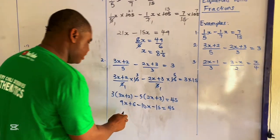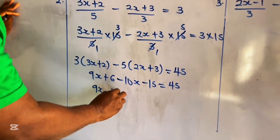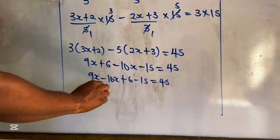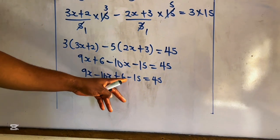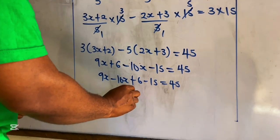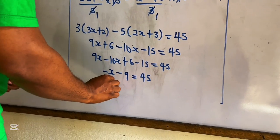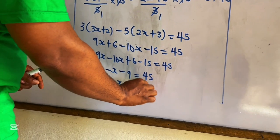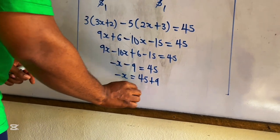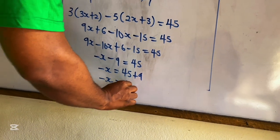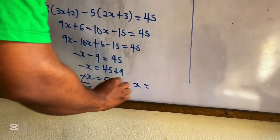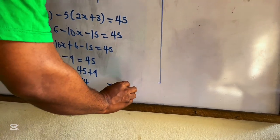Collecting like terms: 9x minus 10x is negative x, and 6 minus 15 is negative 9. So negative x minus 9 equals 45. Then negative x equals 45 plus 9, which is 54. Dividing both sides by negative 1 gives x equals negative 54.